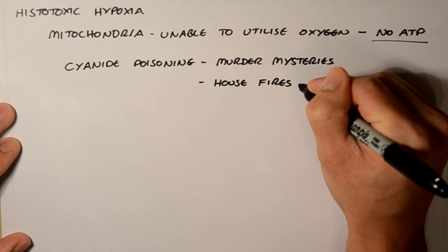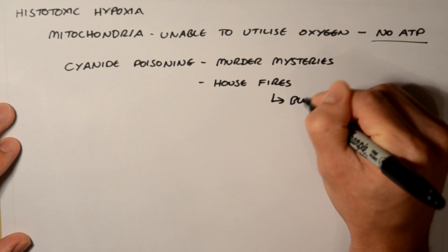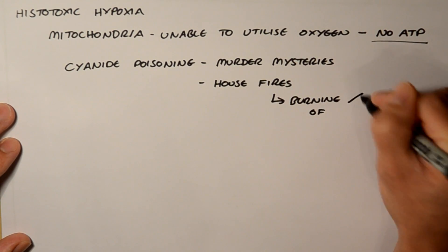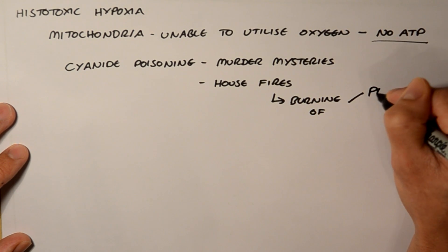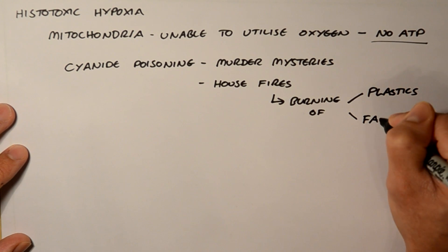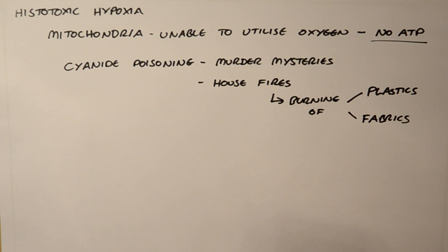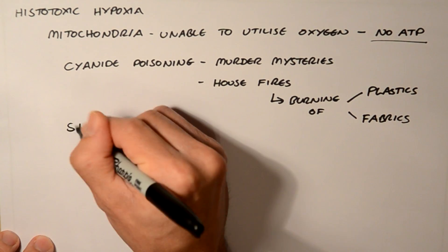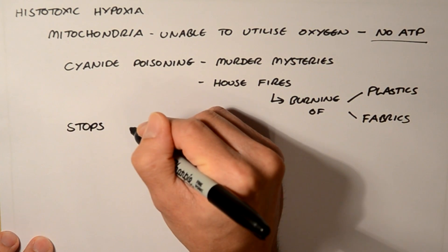And this could be from the burning of certain plastics and certain fabrics. This is because cyanide binds to the ferric ion in cytochrome oxidase A3 and it prevents the final reaction in the electron transport chain. So it effectively stops oxidative phosphorylation.